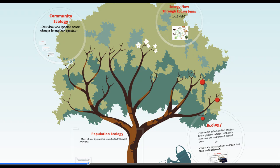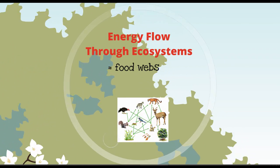As I mentioned, one of the natural processes that's really important in ecosystems is energy flow, and really how we see energy flow through ecosystems is through what we call food webs. All of the energy in food webs ultimately originates from the sun. All the energy, even in your body, actually started with the sun and moved through a food web to get to you.